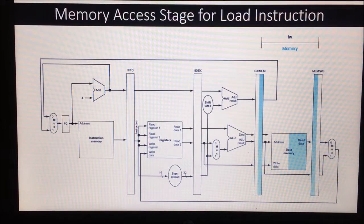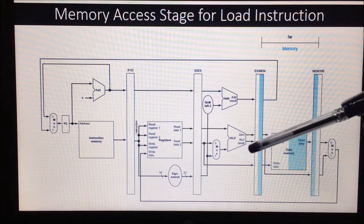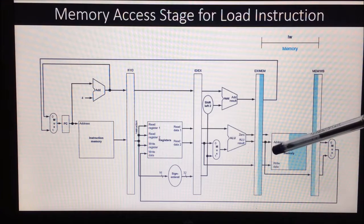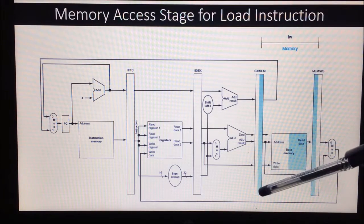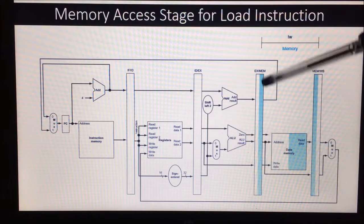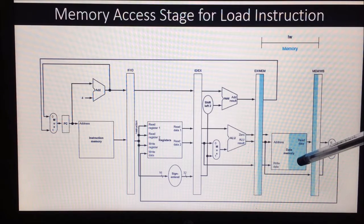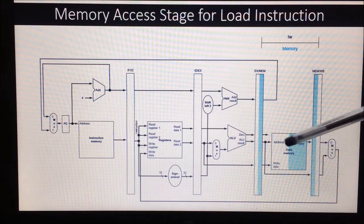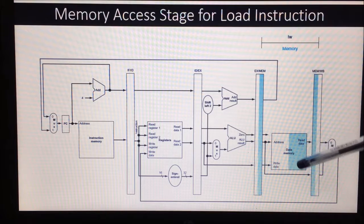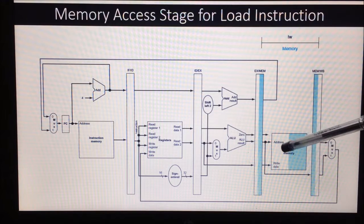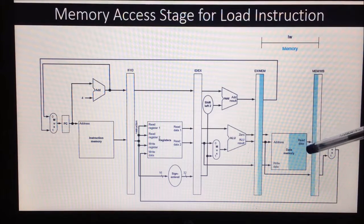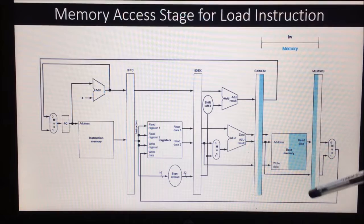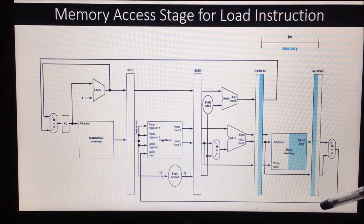In the memory access stage, the operand address, which is the ALU result stored in the EX/MEM register, is given to the data memory. From the data memory, the corresponding data from the given address is read out and stored in the MEM/WB — that is, the write back register.